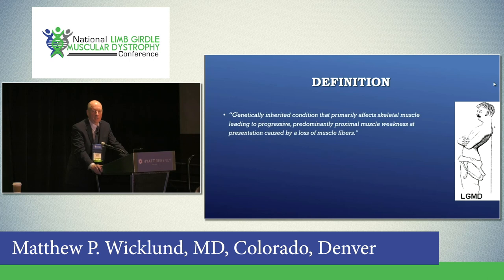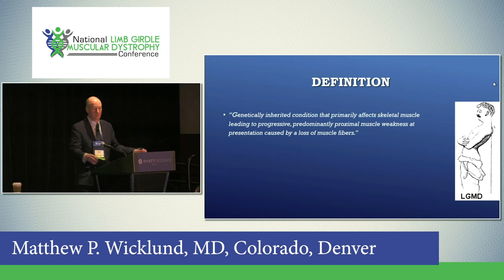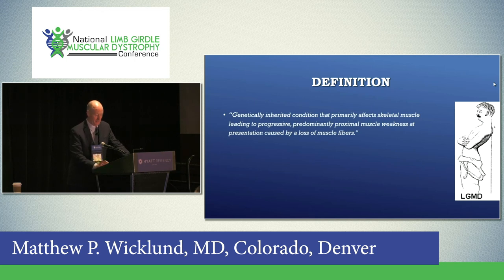Our colleagues in Europe recently redefined the limb girdle muscular dystrophies. The definition: a genetically inherited condition that primarily affects skeletal muscle, leading to progressive, predominantly proximal — so hips and shoulders — muscle weakness at presentation, caused by loss of muscle fibers.